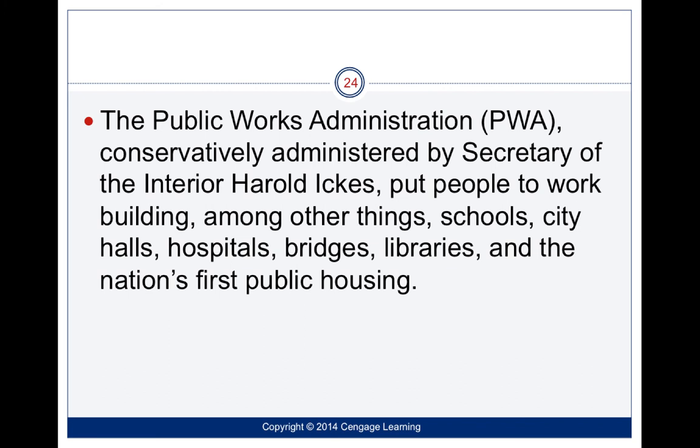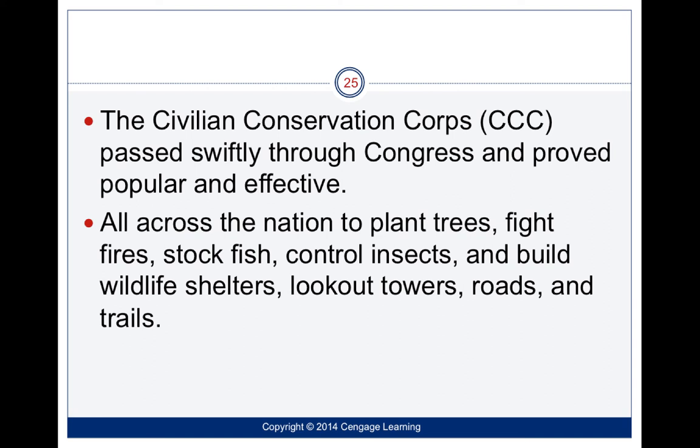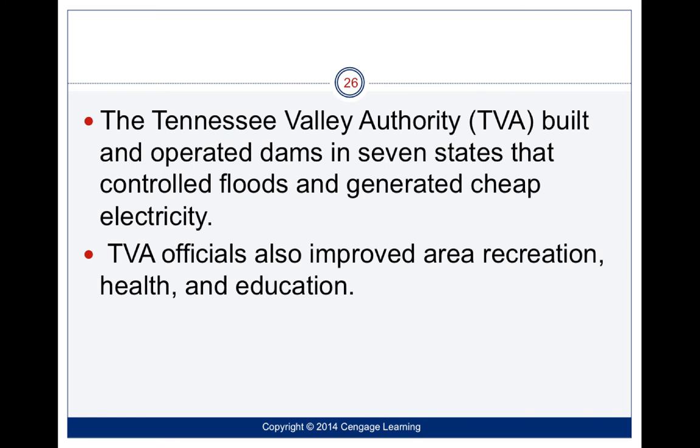The CCC, or the Civilian Conservation Corps, also proved effective. Their goal was to plant trees, fight fires, stock fish, control bugs, build shelters and lookout towers — preserving our natural resources. The TVA, the Tennessee Valley Authority, built and operated dams in seven states, which could also generate hydroelectricity.